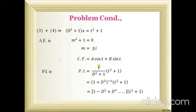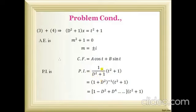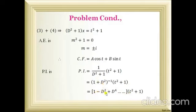Now for the particular integral: P.I. equals 1/f(D) times the RHS, so P.I. = 1/(D² + 1) times (t² + 1). This is an algebraic expression form, so we need to write the denominator in the form (1 + x) or (1 − x). Here we have (1 + D²), so we move it to the numerator: (1 + D²)^(−1) times (t² + 1). Expanding using the binomial formula: (1 + D²)^(−1) = 1 − D² + D⁴ − ... Higher derivative terms of (t² + 1) beyond the second order vanish, so we need only up to the second term.